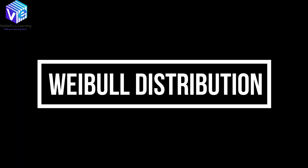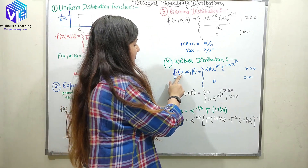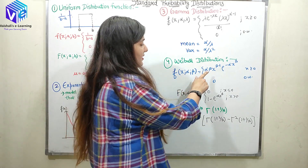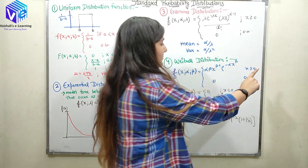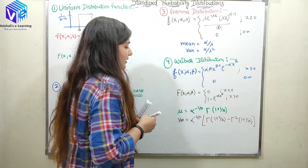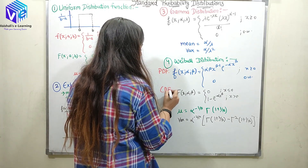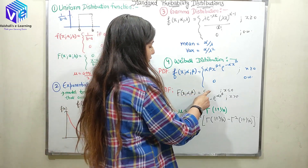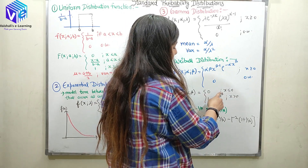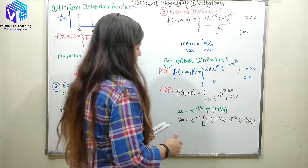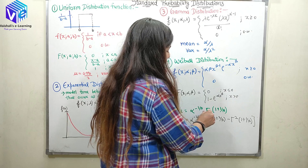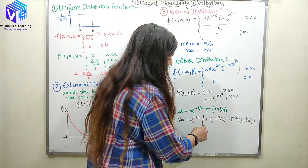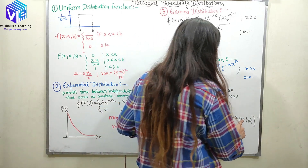The next distribution is the Weibull distribution. The PDF f(x; α, β) is equal to α·β·x^(β−1)·e^(−α·x^β) when x is greater than or equal to 0, and 0 otherwise. The CDF F(x; α, β) is equal to 0 when x is less than or equal to 0, and 1 − e^(−α·x^β) when x is greater than or equal to 0. Mean is equal to α^(−1/β) · Γ(1 + 1/β), and variance is equal to α^(−2/β) · [Γ(1 + 2/β) − Γ²(1 + 1/β)].